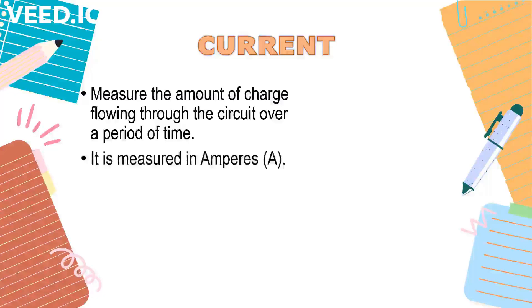Current is measured in amperes. The standard unit of charge is coulomb. One ampere is the rate of flow equal to one coulomb of charge per second passing through a point in a circuit.